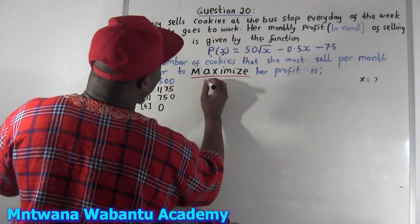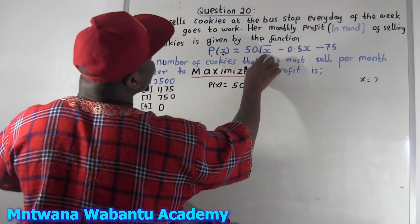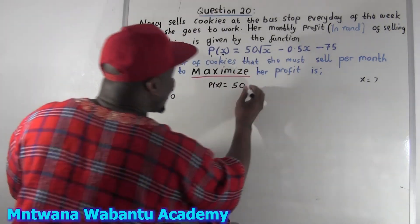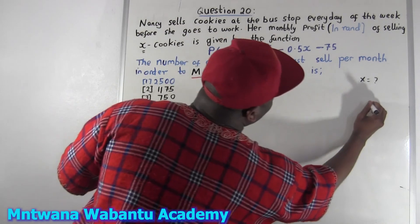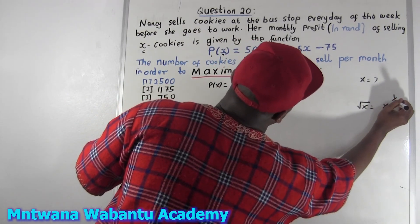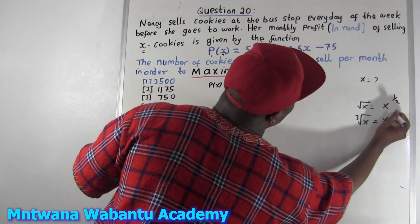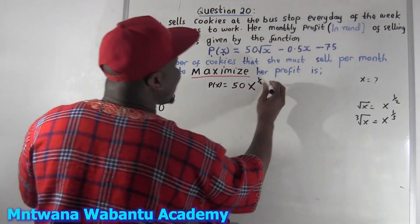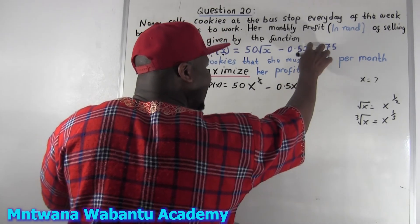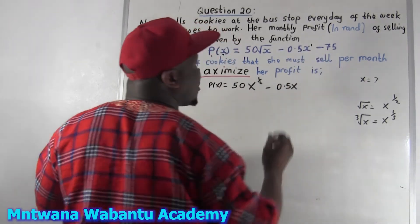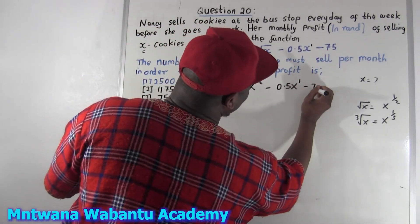I'm going to check my profit function. To differentiate it, I'm going to write it as an exponent. We know square root of x is the same as x to the power of one-half. Square root of x cubed equals x to the one-third — same thing. For this case it's just one over two, minus 0.5x, and then minus 75. Since there's no exponent on x, we know the exponent must be one.